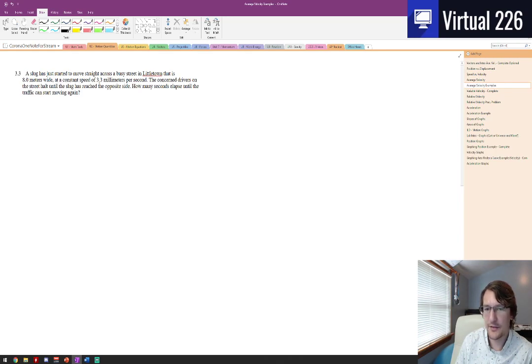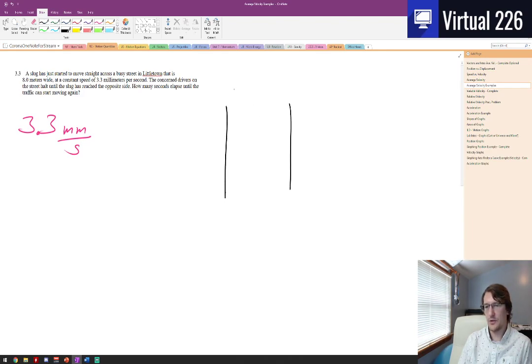A constant speed of 3.3 millimeters per second. The concerned drivers on the street are halting until the slug reaches the opposite side. How many seconds elapse until the traffic can start moving again? So basically you got a road, it's eight meters, and this slug is moving super slow at just 3.3 millimeters per second.